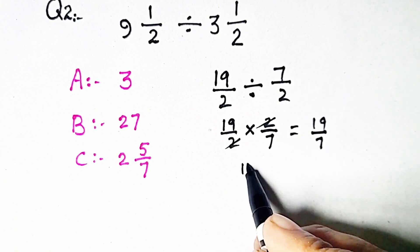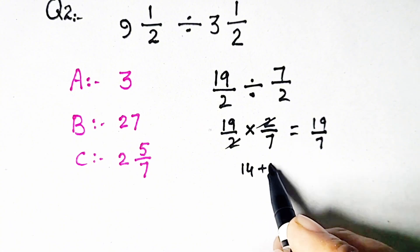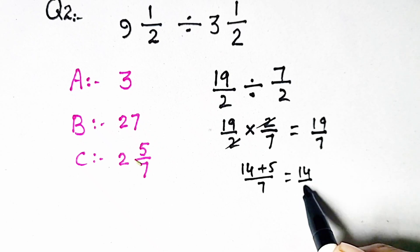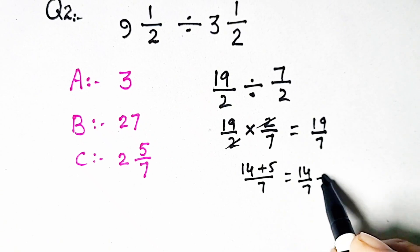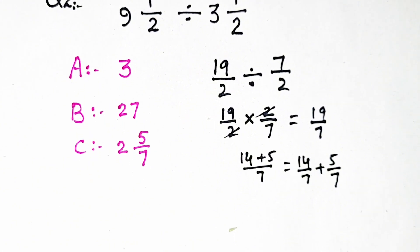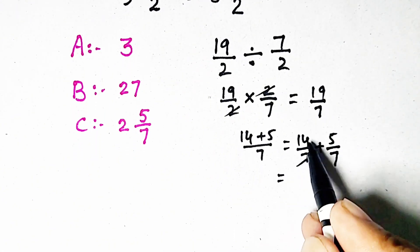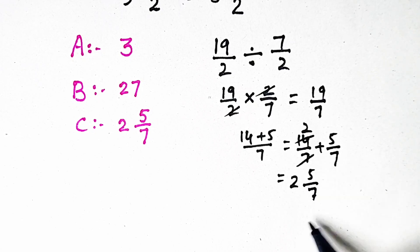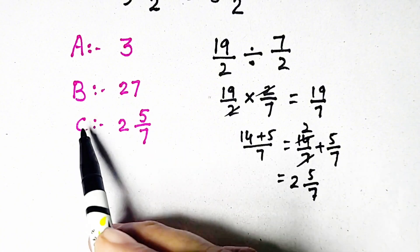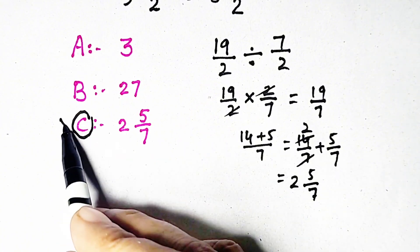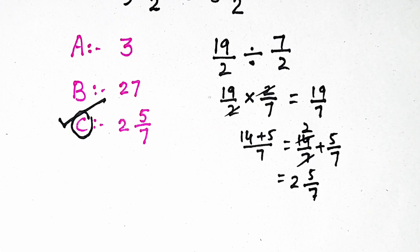19/7 can be written as 14 plus 5 divided by 7. So 14/7 plus 5/7 gives 2 and 5/7. This is our correct answer, and in this question, option C is the correct choice.